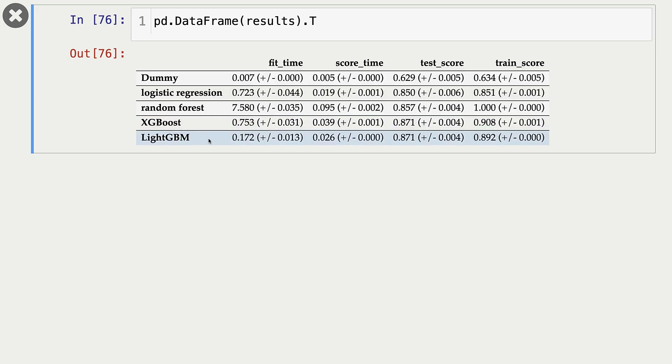What do we see here? We see that XGBoost and LightGBM are giving us the best validation scores. Now in this particular case, logistic regression scores are not that bad, but we are still getting better results with XGBoost and LightGBM compared to logistic regression.